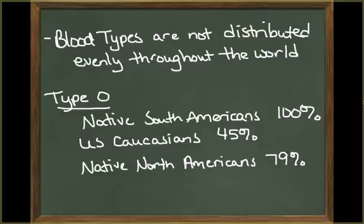Individuals with these blood types are not distributed evenly throughout the world. For instance, the percentage of Native South Americans with type O blood is 100%. The percentage of Caucasians in the U.S. with type O blood is 45%, while the percentage of Native North Americans with type O is 79%. You can view the average values for various populations in a table in your textbook.